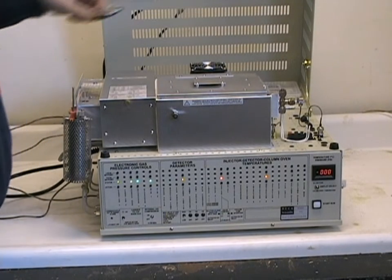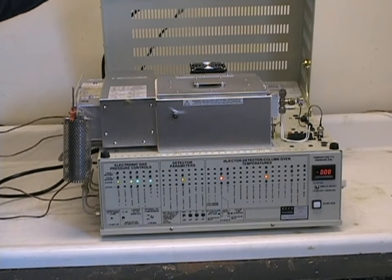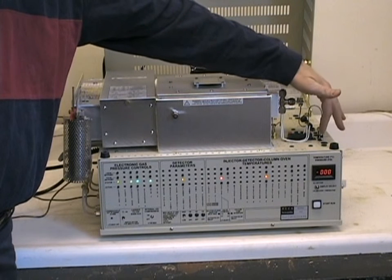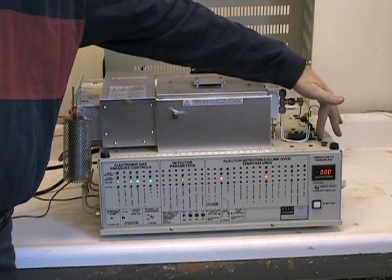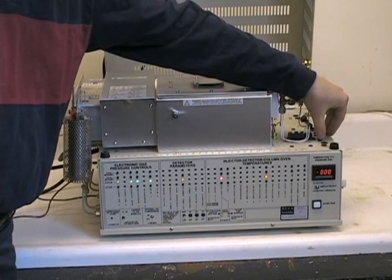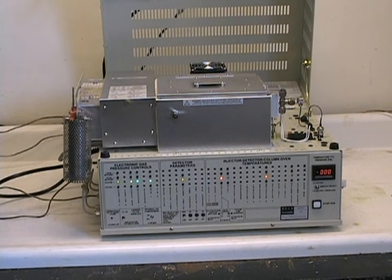With all of our temperatures set, we can now toggle the FID gain switch for the detector to either low or high, depending upon the sensitivity requirements. It is recommended to start with a gain of low initially, since this will give you minimal noise and drift, and raise it to high as needed.